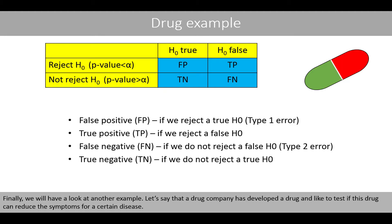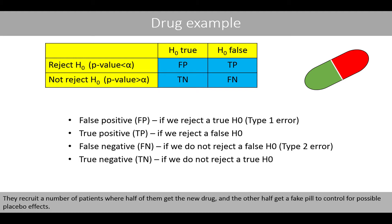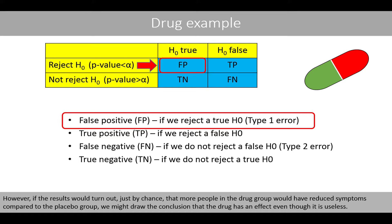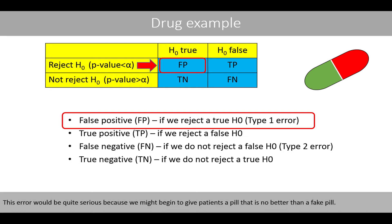Finally, let's look at another example. A drug company has developed a drug and would like to test if it can reduce the symptoms for a certain disease. They recruit patients where half get the new drug and the other half get a fake pill to control for possible placebo effects. Suppose that the drug has no effect at all, which means the null hypothesis is true. Then we would like the study to result in a true negative result. However, if by chance more people in the drug group have reduced symptoms compared to the placebo group, we might conclude that the drug has an effect even though it is useless — giving patients a pill that is no better than a fake pill.